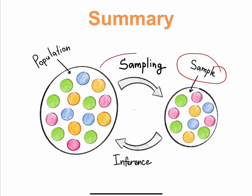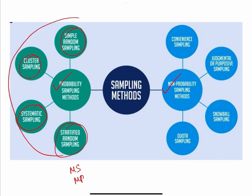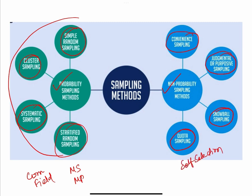In summary, the process by which we select the sample from the study population is called sampling, and the inference or generalizability will be for the entire study population. It is broadly divided into probability sampling and non-probability sampling. Under probability sampling we have simple random sampling, cluster sampling, systematic random sampling, stratified random sampling, multi-stage sampling, and multi-phase sampling — most commonly used in community-based or field-based studies. Non-probability sampling methods include convenient sampling, consecutive sampling, judgmental or purposive sampling, snowball or referral sampling, quota sampling, and self-selection sampling — most commonly used in hospitals or other institutions. If you like this video please click the like button and share it with your friends, and if you haven't subscribed to the channel please subscribe. Thanks for watching.